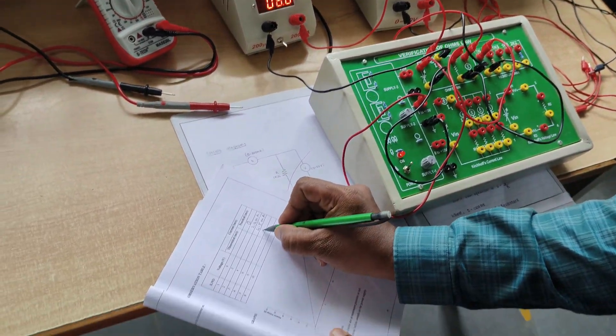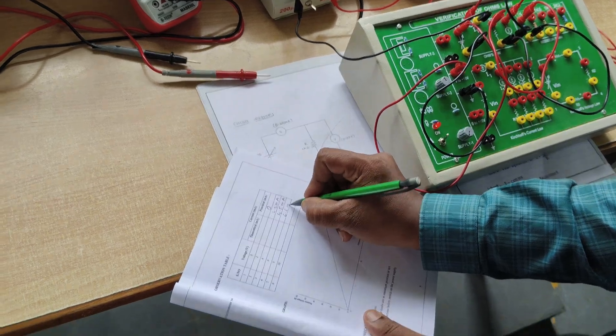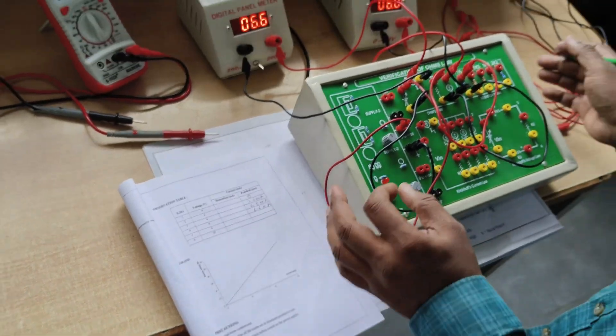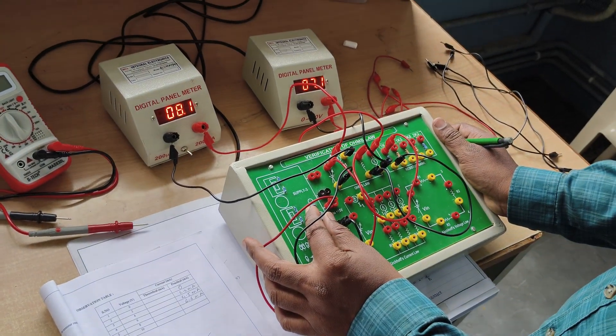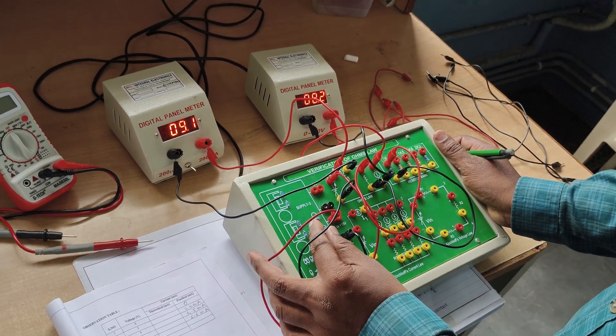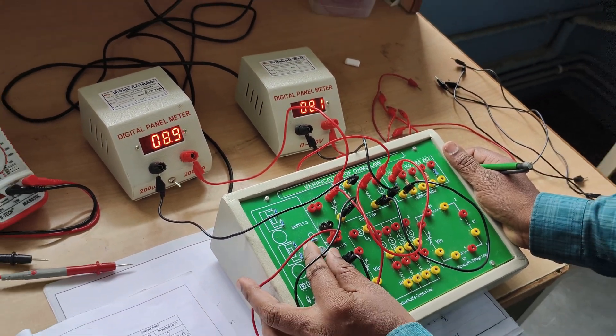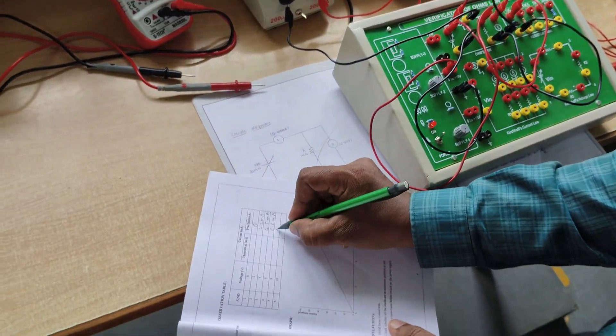At 6 volts, we get 6.6 milliamps. Next, apply 8 volts. At 8 volts, we get 8.8 milliamps.